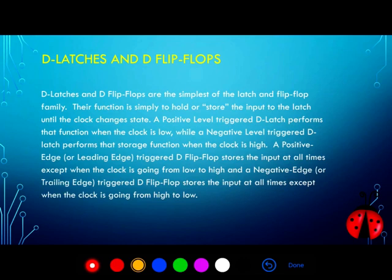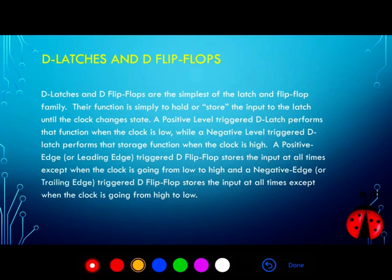What we looked at today are D latches and D flip-flops, from their symbol all the way down to their implementation. Their function is simply to hold or store the input until the clock changes state or triggers to a different level. A positive level triggered D latch holds when the clock is low and transfers D to the output when the clock is high. For flip-flops, a leading edge triggered D flip-flop stores the input at all times except when the clock goes from low to high, and vice versa for a trailing edge triggered flip-flop. Thanks for joining us as we continue to explore the world of digital logic and circuits.